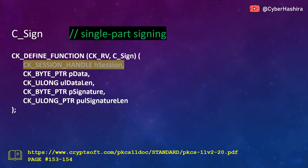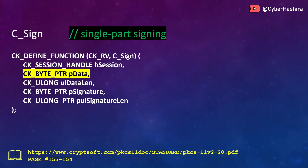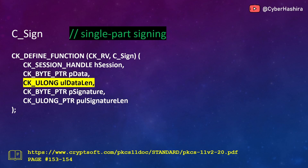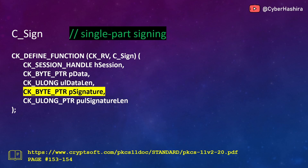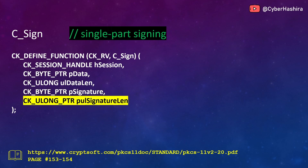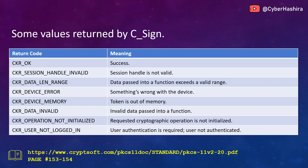C_Sign takes five arguments. The first argument is a session handle. The second argument indicates the location where the data to be signed is stored, of type CK_BYTE_PTR. The third argument is the total length of the data to be signed, of type CK_ULONG. The fourth argument specifies the location where the signature will be stored, of type CK_BYTE_PTR. The fifth argument is the length of that signature, of type CK_ULONG. More information on pages 153 and 154.